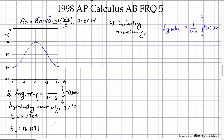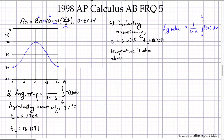So now we can finally evaluate part C. T1 equals 5.2309 and T2 equals 18.7691. The temperature is at or above 78 degrees Fahrenheit when t is between T1 and T2. Whether we use less than or equal to or just less than is really immaterial because these are just approximations.